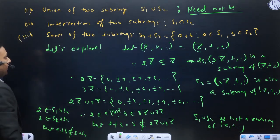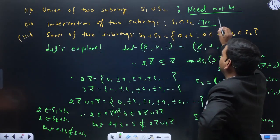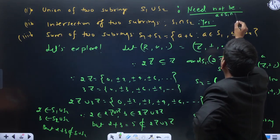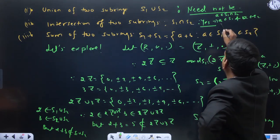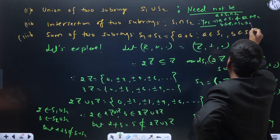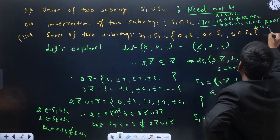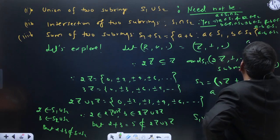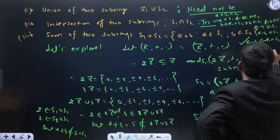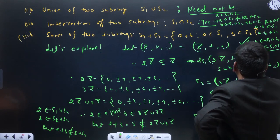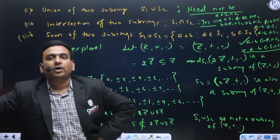Intersection par agar baat aayegi, this will definitely give you yes. Because if a belongs to S1 ∩ S2, then a belongs to both S1 and S2. Similarly if b belongs to S1 ∩ S2 then b is in both. So a minus b is in S1 and in S2, hence in S1 ∩ S2. And a·b is in S1 and S2, hence in S1 ∩ S2. So intersection of two subrings is always a subring.